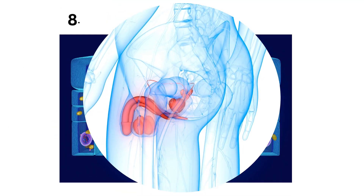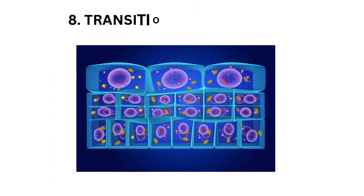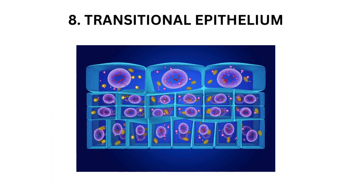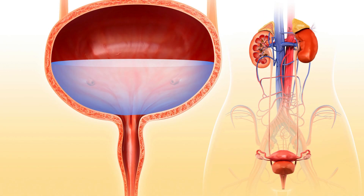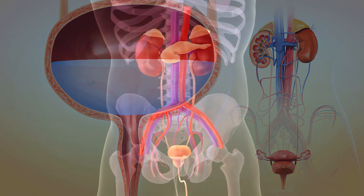Transitional epithelium is a multilayered epithelium that can change shape from cuboidal to squamous. It lines the urinary bladder and portions of the urinary tract, and allows for stretching.